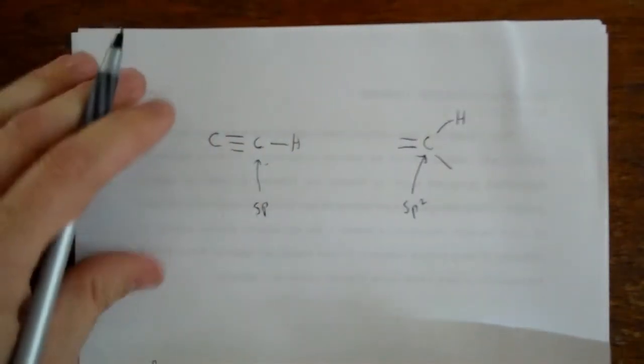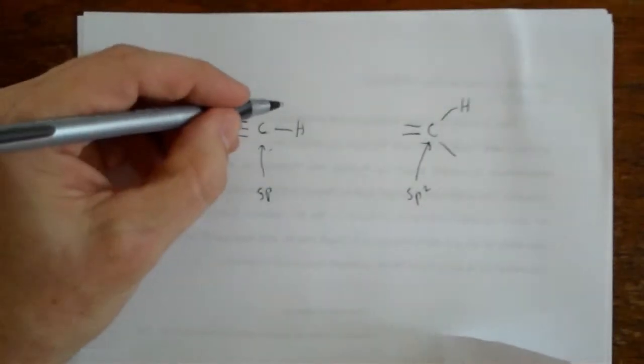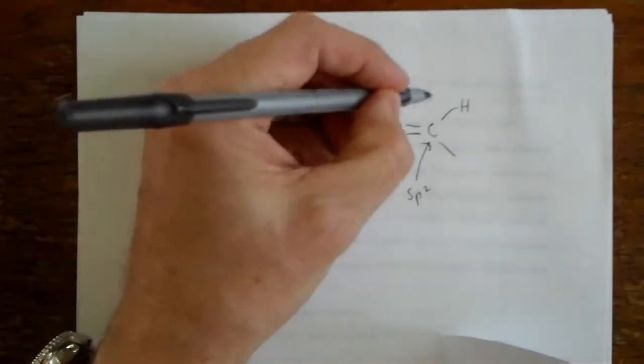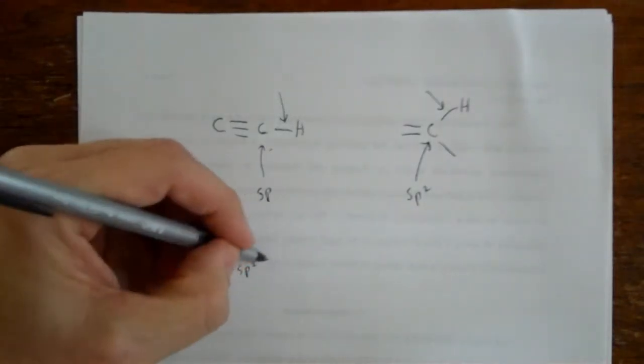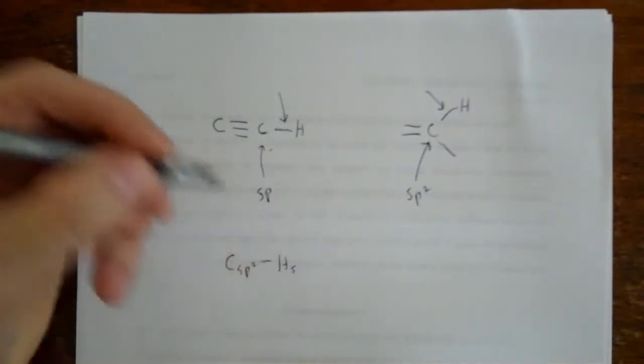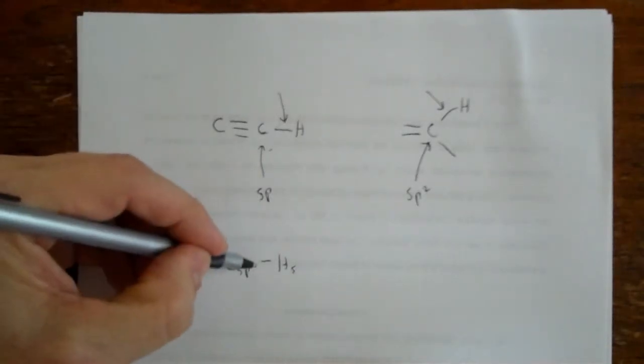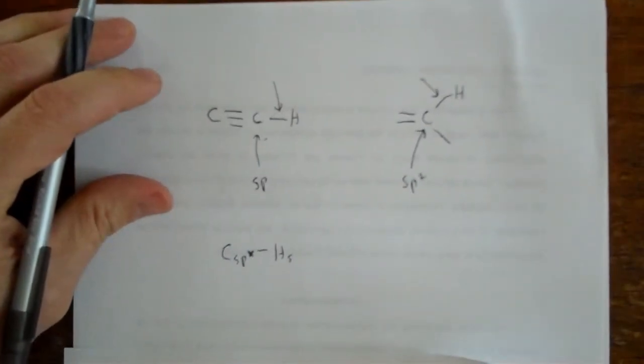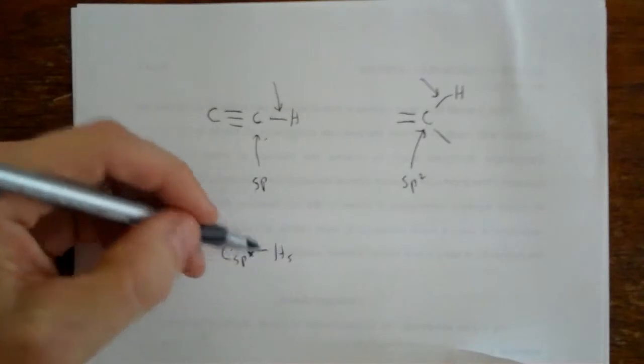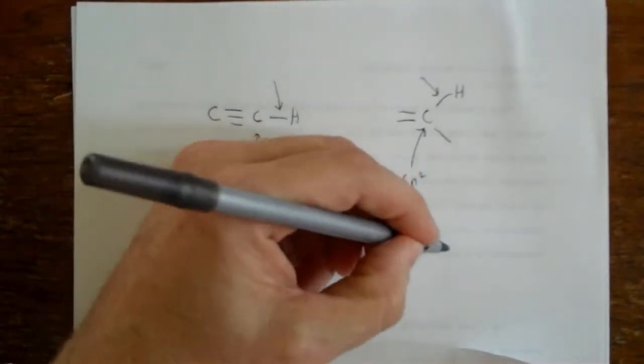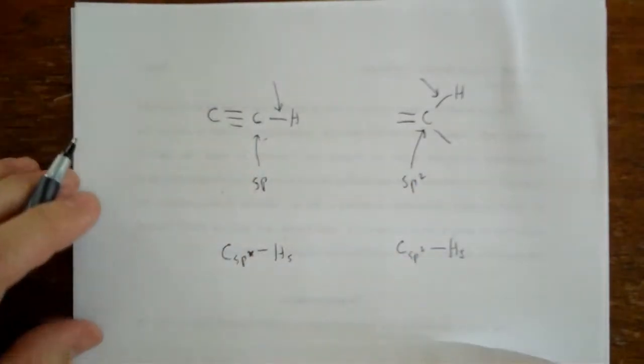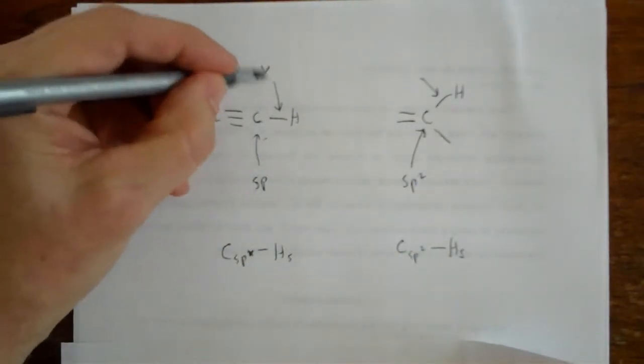Now, the trick for objective number two is to describe this particular bond here, and then we're going to compare it to that bond. This bond is made up of a carbon sp orbital and one hydrogen s orbital. This is made up of a carbon sp2 hybridized orbital and a hydrogen s orbital.